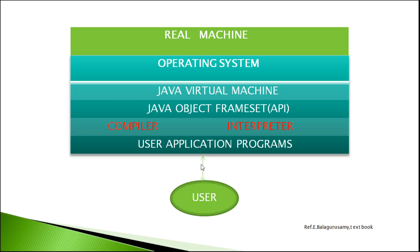If you want to use the compiler, you can convert the source code using the compiler and store the bytecode into the Java Virtual Machine. The interpreter then converts the bytecode into machine code for the user. The Java object framework is called the Application Program Interface.